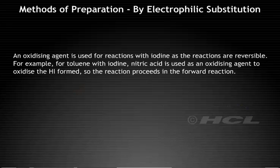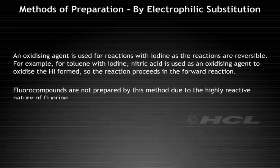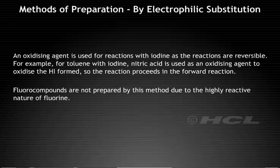An oxidizing agent is used for reactions with iodine as the reactions are reversible. For example, for toluene with iodine, nitric acid is used as an oxidizing agent to oxidize the HI formed. So, the reaction proceeds in the forward reaction. Fluorocompounds are not prepared by this method due to the highly reactive nature of fluorine.